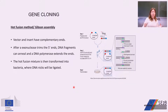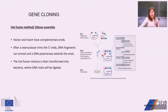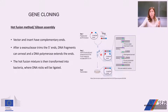Another gene cloning strategy is the hot fusion method. Both the linearized vector and the insert have complementary ends, which are introduced into the gene by PCR. We then place the linearized vector and gene into a tube containing hot fusion buffer, which includes an exonuclease, a DNA polymerase, and their substrates. The exonuclease trims the 5-prime ends of both vector and gene, then DNA polymerase extends the ends. Finally, the hot fusion mixture is transformed into bacteria where DNA nicks are sealed.